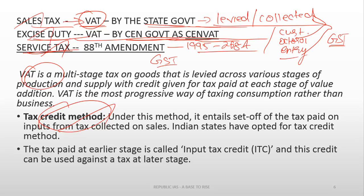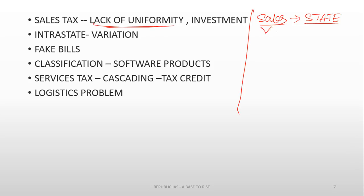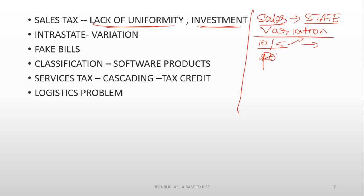To understand the need for GST, you need to understand the flaws in the taxation system before its implementation. The sales tax was levied and collected by the state government. The major problem was that sales tax varied from state to state. For example, Tamil Nadu might tax a product at 10% while another state taxes the same product at 5%. This tax rate variation was used as a political tool to attract investment — states would reduce tax rates to attract investment.